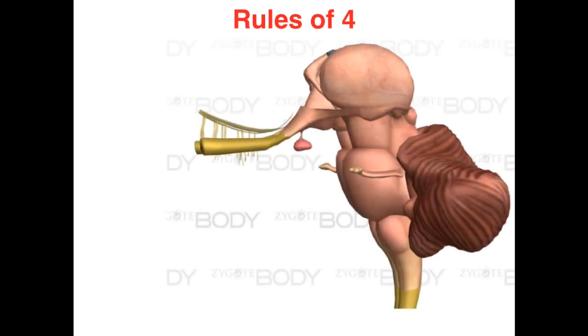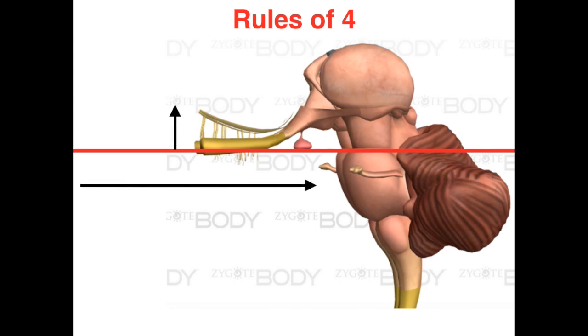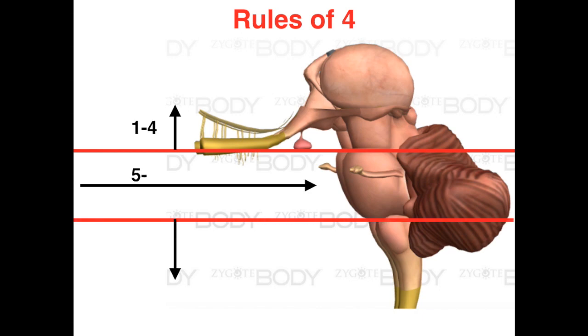Now before we really dive into the images for today's video, I have to go over a trick for the cranial nerves — some of you may have heard of this: the rules of four. There are tons of them, but if you only memorize one, remember this: there are four cranial nerves above the pons, four in the pons, and four below the pons. And they follow numerical order from 1 through 12.